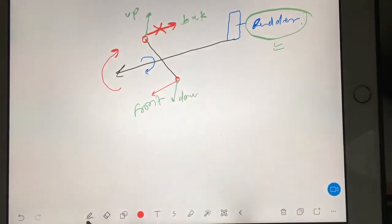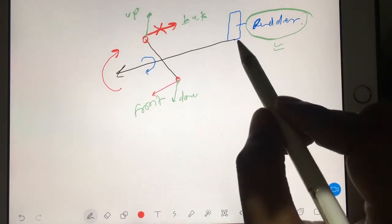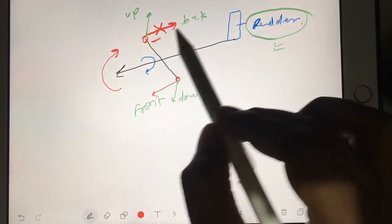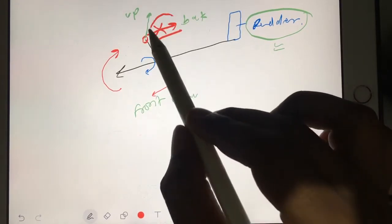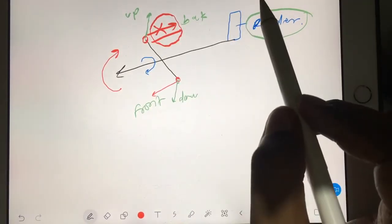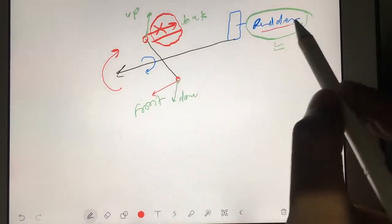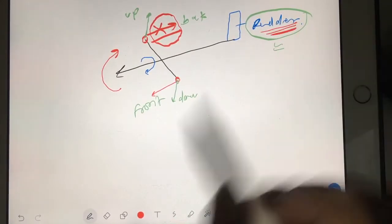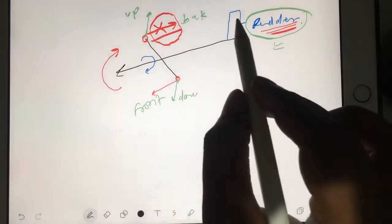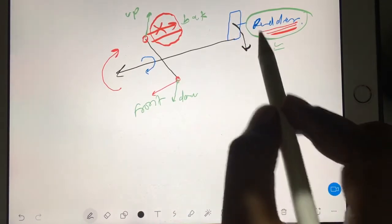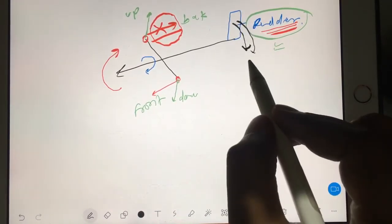So you have to produce counter effect to vanish or you can say to diminish this extra yawing. So for that you have to deflect the rudder in this direction. I am in port side, you should deflect the rudder.